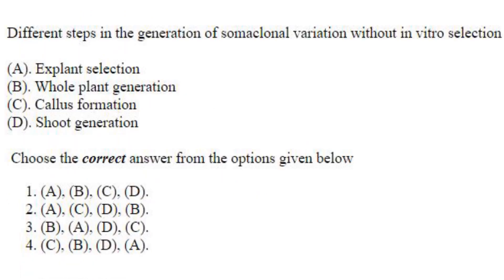The different steps in the generation of somaclonal variation without in vitro selection are: first, explant selection (A); then callus formation (C); then shoot generation (D); and then whole plant generation (B). So the order is A, C, D, B — answer is option 2.